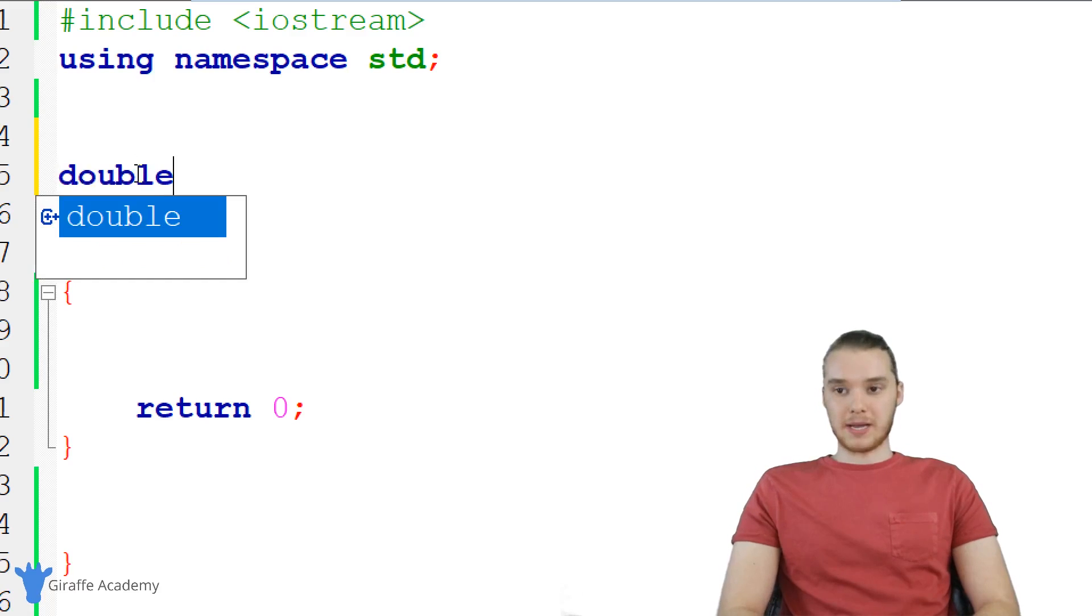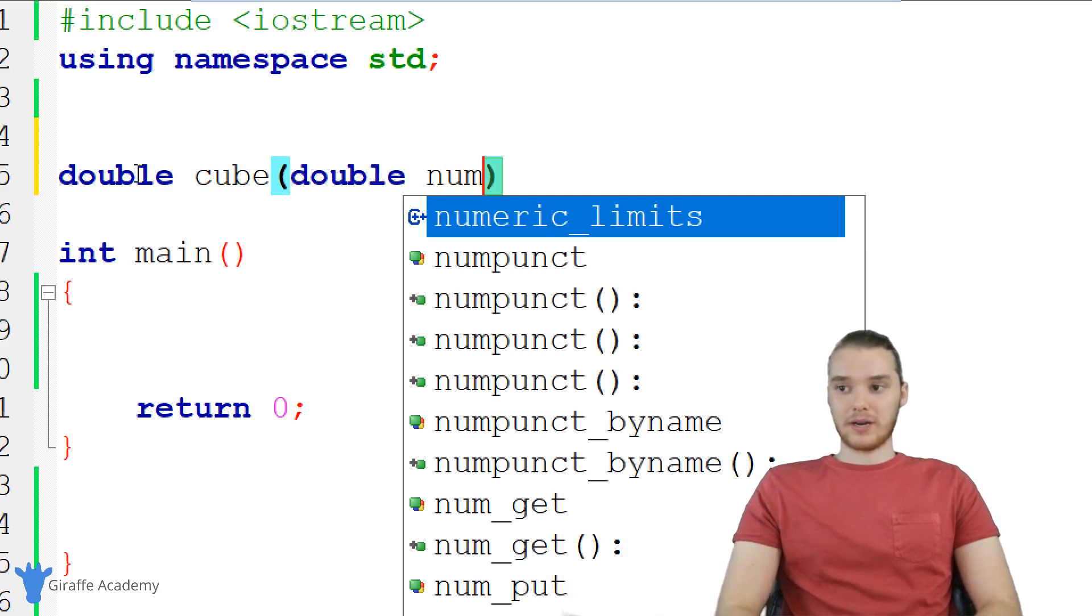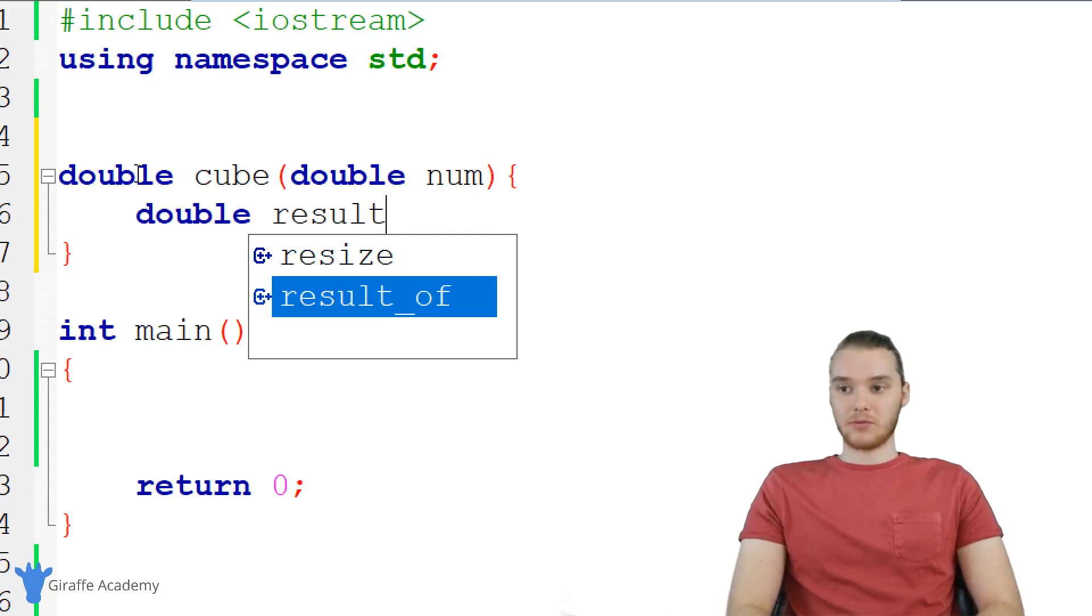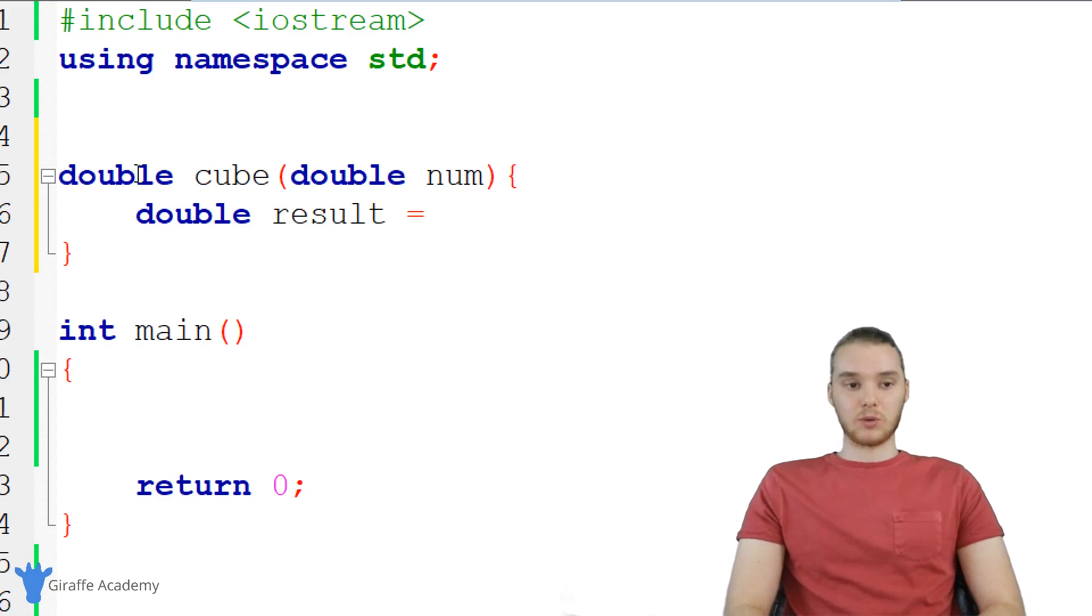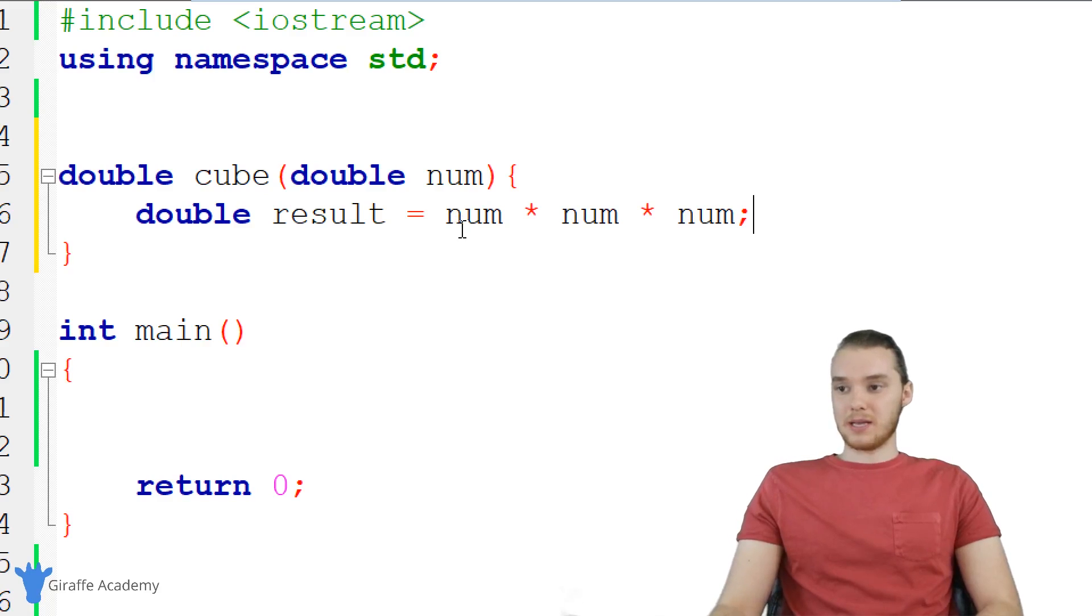So why don't we just make it a double. And I'm going to say double. Now we need to give this a name. So I'm just going to call it cube. We're going to take one parameter into this function. So why don't we take a double, and we'll just call it num. Now, inside of this function, all we want to do is cube the number, and then return the result that we get. So I'm actually going to create a double, I'm going to call it result. And I'm going to set this equal to the cubed value of num. So I'm just going to set it equal to num, times num, times num. So this is basically me cubing num. So now result has inside of it, the result of cubing all these numbers.